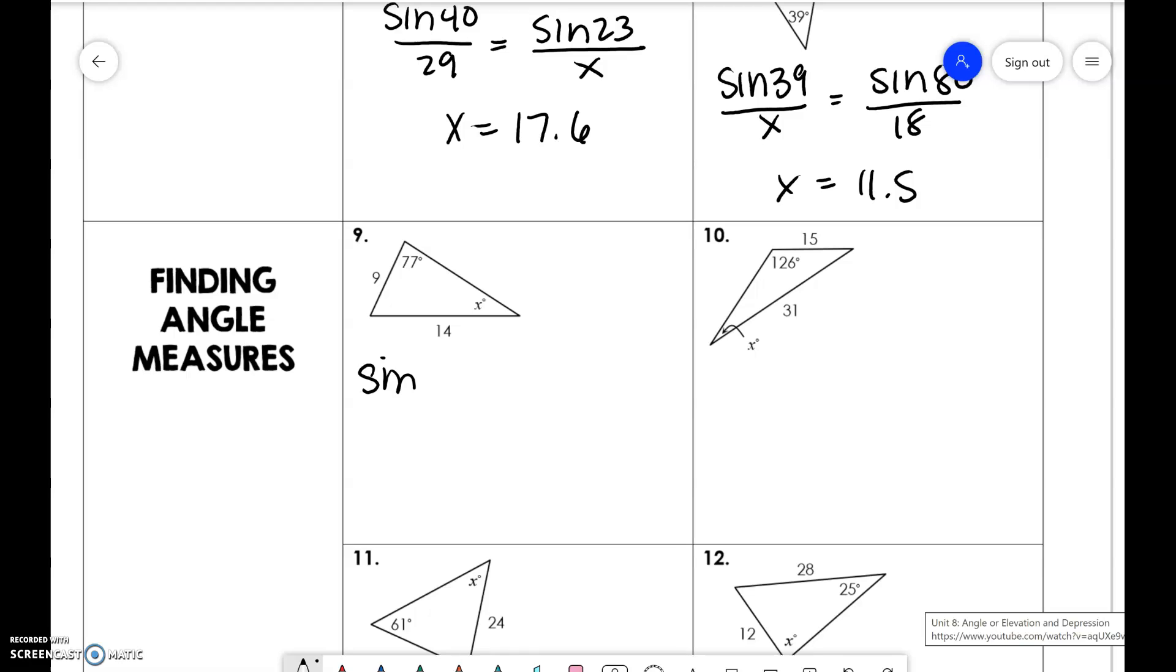So sine of x over 9 is equal to sine of 77 over 14. So 14 sine of x is equal to 9 sine of 77. So sine of x is equal to 9 times sine of 77 over 14.